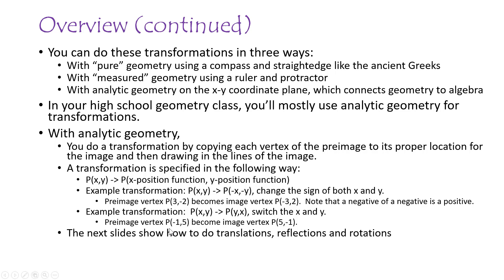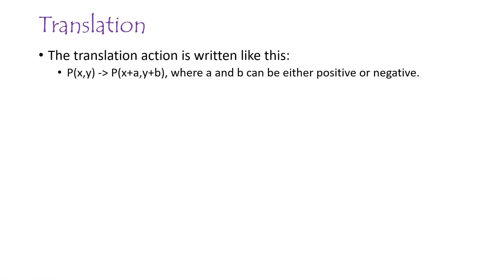There are other examples too. The next slides show how to do translations, reflections, and rotations. A translation is just moving the figure without turning or rotating it in any way. The formula is: for any point, you move the X a distance of A and the Y a distance of B, where A and B can be either positive or negative, so you can move the figure anywhere you want.